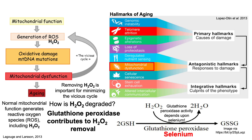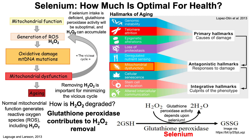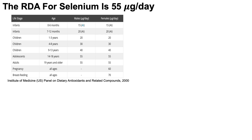The activity of glutathione peroxidase depends upon the mineral selenium. So if selenium intake is deficient, glutathione peroxidase will be suboptimal, and hydrogen peroxide levels can accumulate. With this in mind, how much selenium is optimal for health? The RDA, the recommended dietary allowance for selenium, is 55 micrograms per day.